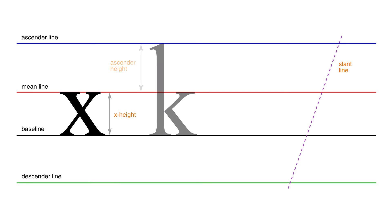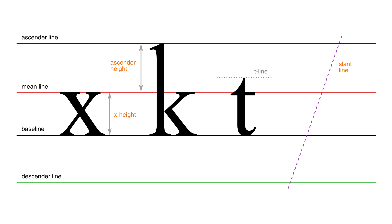The part of a letter that extends above the mean line is called the ascender, and it typically reaches up to the ascender line. The space between the mean line and the ascender line is called the ascender height. Note that the letter T usually stops somewhere between the mean line and the ascender line. While we could add a T-line, it's not something that's done in practice.